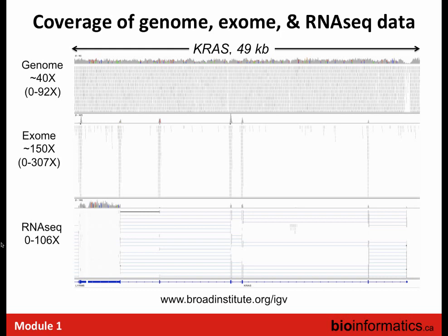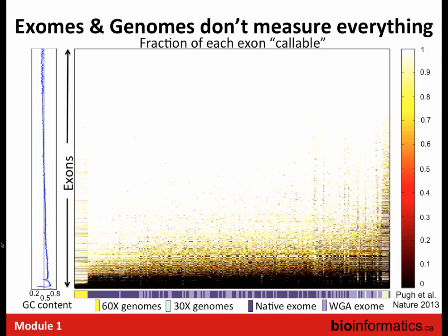Those horizontal lines in the RNA-seq data indicating a read mapped to two different exons are from a gapped alignment — I'll zoom into some of these later so you can see exactly what that breakpoint looks like.